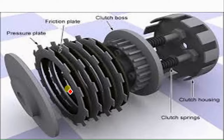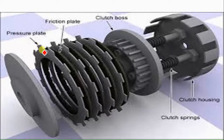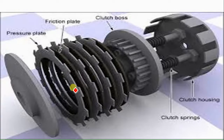You can see the exploded view of this multi-plate clutch. This shows the arrangement for a scooter: pressure plates, friction plates, and fixing plates are arranged in alternating fashion to provide a high amount of torque.